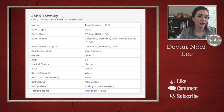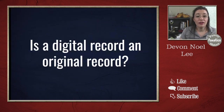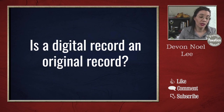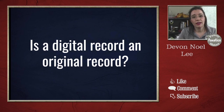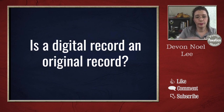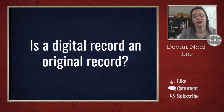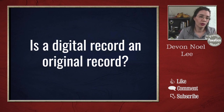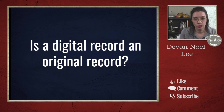There is a debate about whether I've looked at an original record or not — whether a digital image is sufficient to say I've looked at an original. For most of us, it's good enough. There are some instances when you actually need to go look at the physical record because some information was written in pencil or associated with the file that didn't come through in digitizing. Tell me in the comments which side of the fence you're on: original record or digital image only?